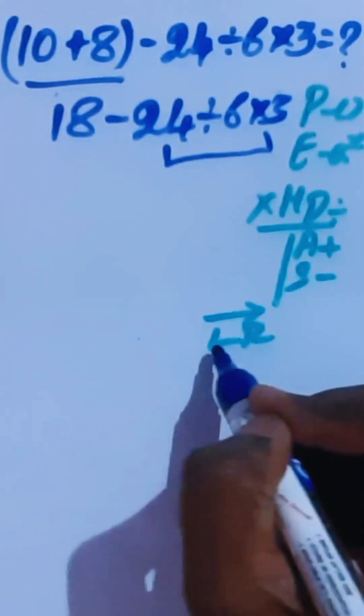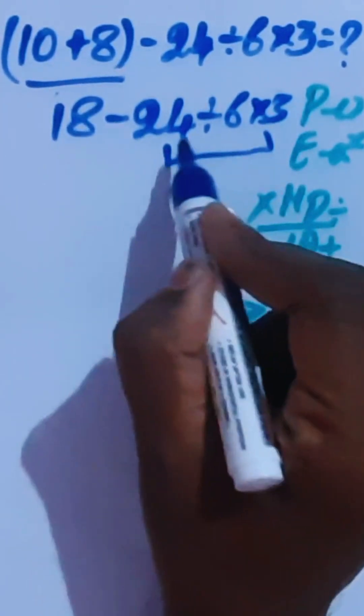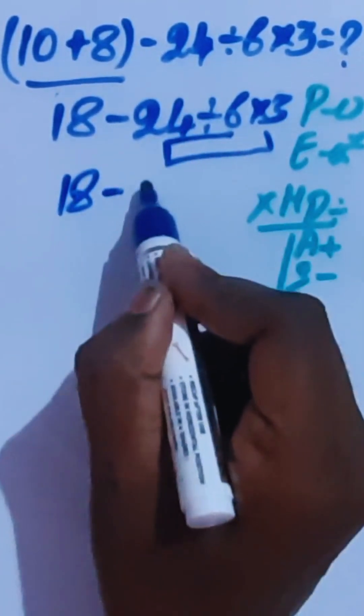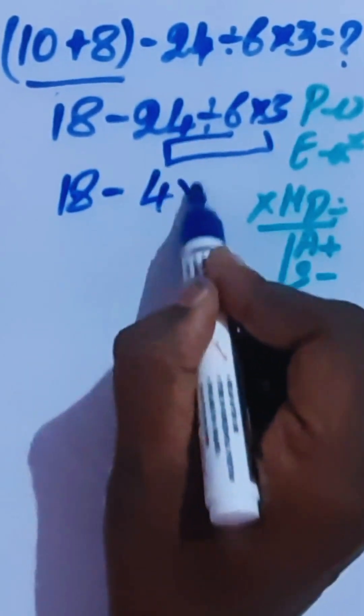Both are equal priority. For this we are going to follow here left to right rule. Left to right is this. So 18 minus this is 4 times this 3.